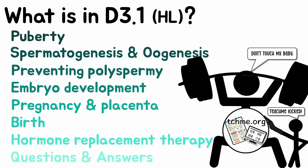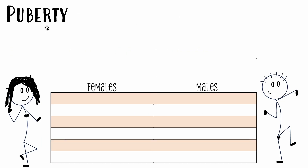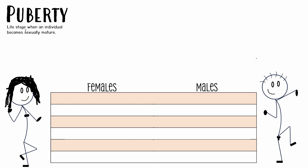Now without further ado, let's get started. Let's talk about puberty first. How can we define puberty? Puberty is a life stage when an individual becomes sexually mature. We're going to see exactly what that means on these little stick figures below very shortly.